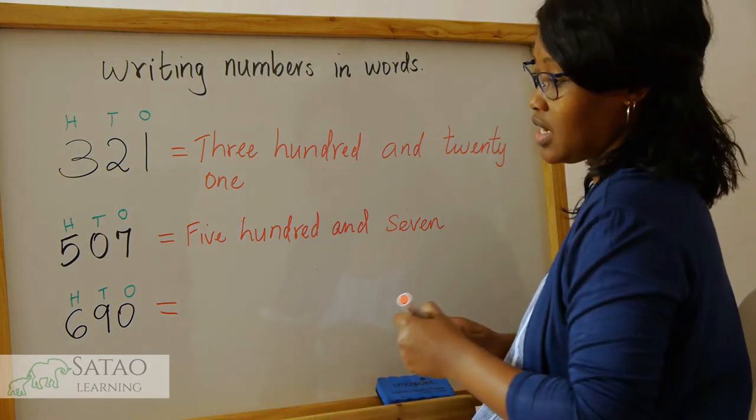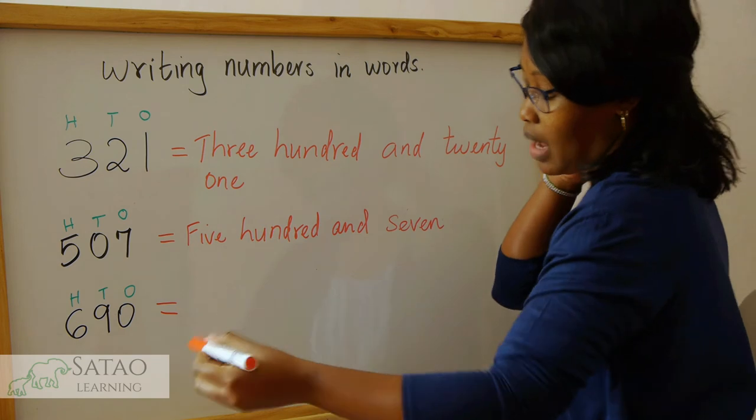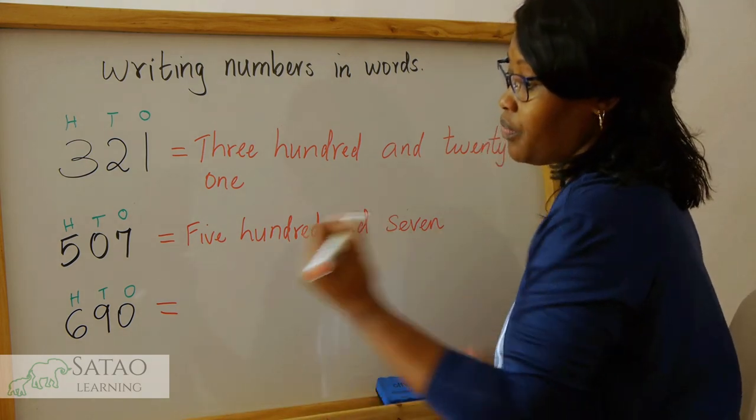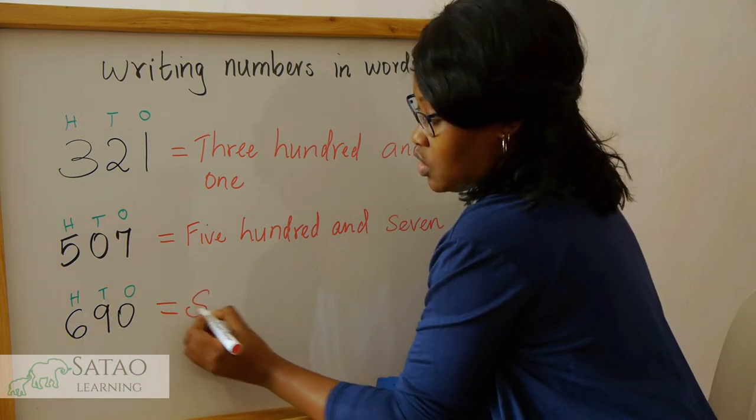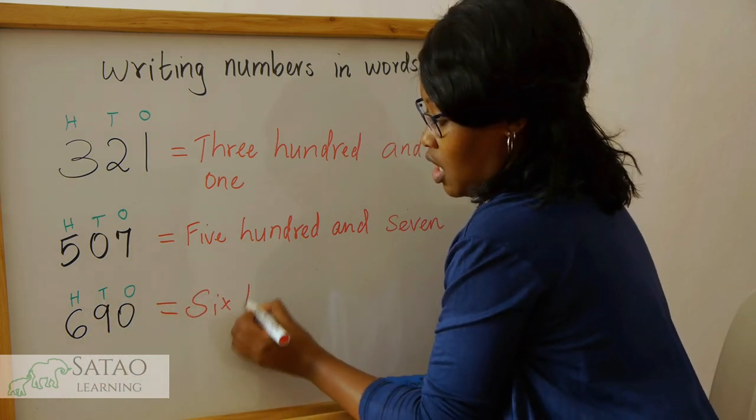So how do we write that number? We begin with the number on the left, which is 6, and it's in the hundreds place, so six hundred.